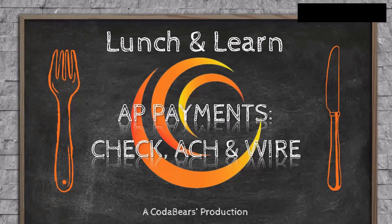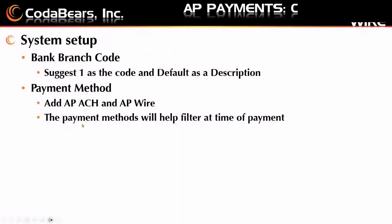Let's get started on setting up our files. You have to do a few different system setups. First, you need to go to your bank branch code. I would suggest a code of one and a description of default. The system requires you to put something into the bank branch code, though it's not necessarily used when processing the different checks. When you talk with your bank, if there is a specific bank branch code you have to use, then you would set it up for that particular bank.